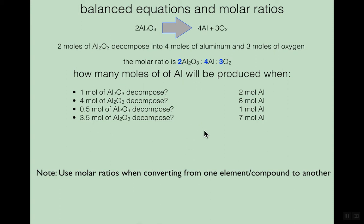This presentation is about molar ratios. Molar ratios refer to the numbers in front of a compound — in this case aluminum oxide — or these elements, aluminum and oxygen. These numbers are called coefficients, and they tell us: I have two aluminum oxides, four aluminums, and three oxygen compounds.